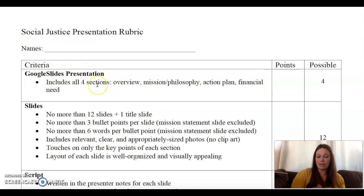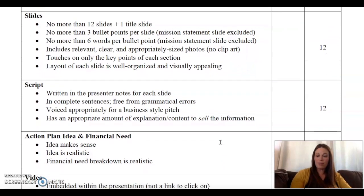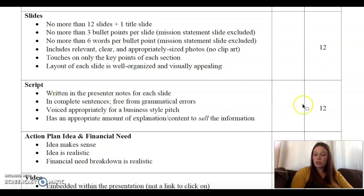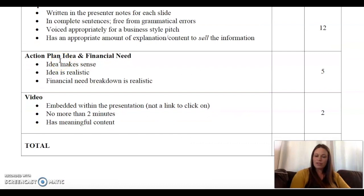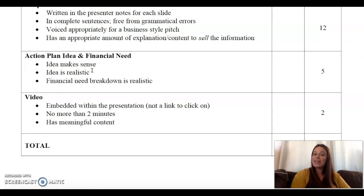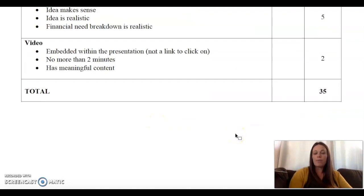The slides themselves — what you put on them and how they look — layout, organization, and visual design counts for something, and that's worth 12 points. The script is also worth 12 points, so it needs to be good. The action plan idea and financial need are worth five points — the idea needs to be realistic and your financial need needs to be realistic. If there were issues with that in your proposal paper, revisit and make adjustments. In all, that makes 35 points.